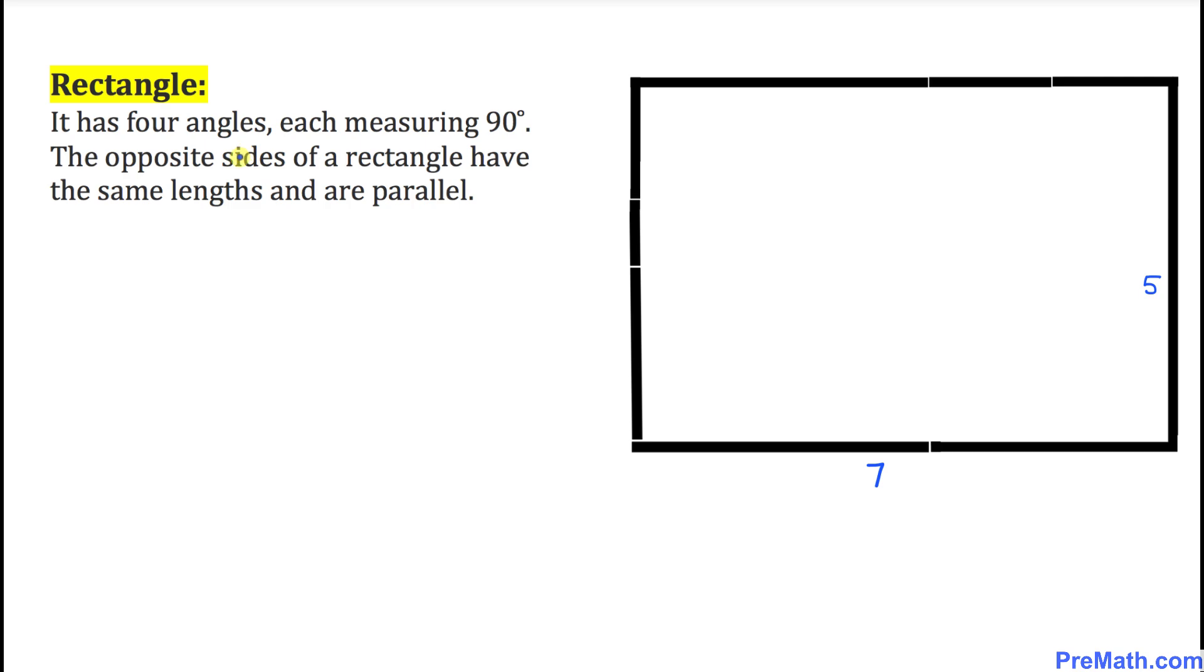And the definition of a rectangle is that the opposite sides of the rectangle have same length and are parallel. That means this side is going to be same as this one, and this one is going to be same as this one. Since this is 5 units, this has got to be 5 units as well. And we figured out this is 7, so this has got to be 7.